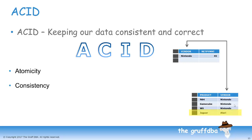C is for Consistency. In our example, we have a parent-child relationship between vendor and product. The vendor shown in the product table must exist in the vendor table. In this example, we have an inconsistency, as Atari has been deleted from the vendor table — that is not allowed in an ACID-compliant database. In Oracle, we can use foreign keys and primary keys to enforce consistency.